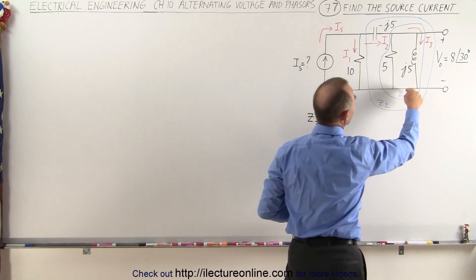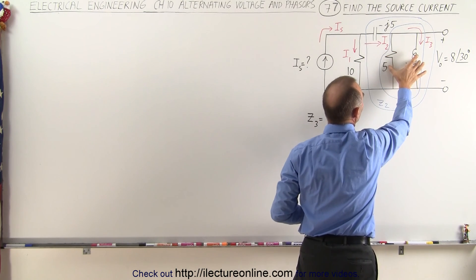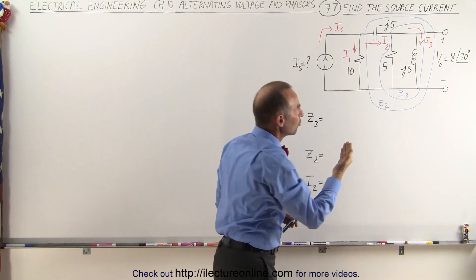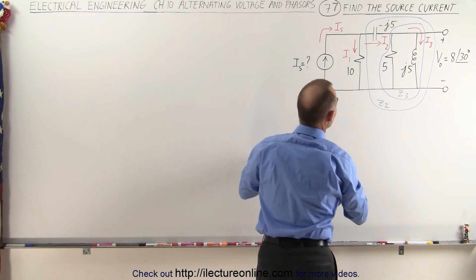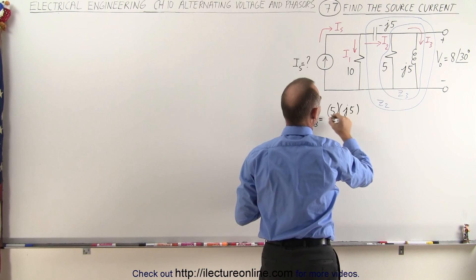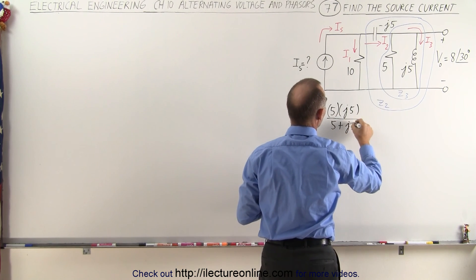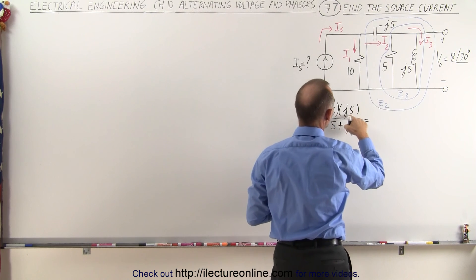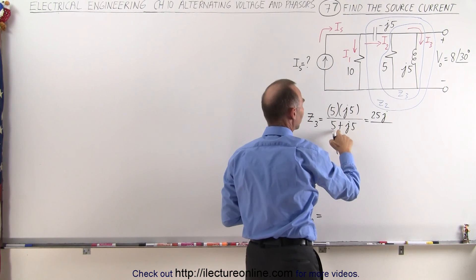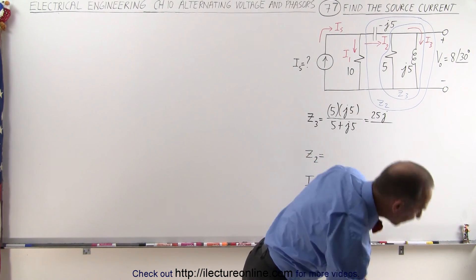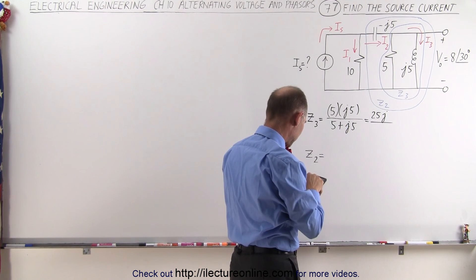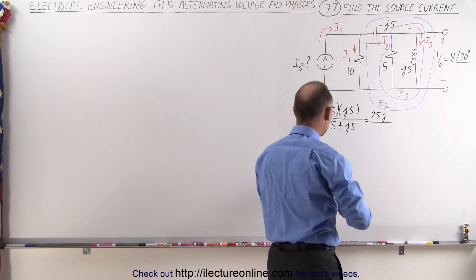Z3 would be the impedance of these two parallel branches right here. Notice that they're connected together on both ends, so they're in parallel. That means we're going to use the product over the sum rule. The product would be 5 multiplied times J5, divided by the sum 5 plus J5. So in the numerator we end up with 25J. In the denominator, converting to magnitude and phase angle format, we take the square root of 50, which is 7.07.